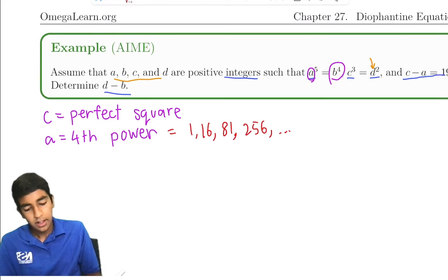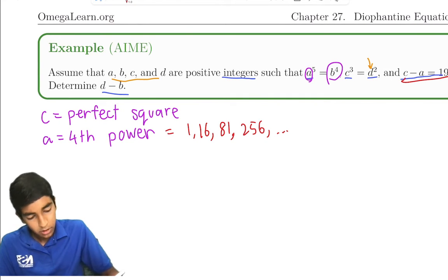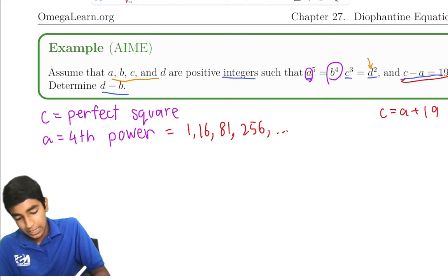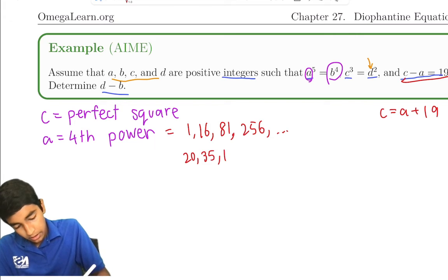Well, we know this condition: c - a = 19. So c is a + 19. So c could be 20, 35, 100, and so on.